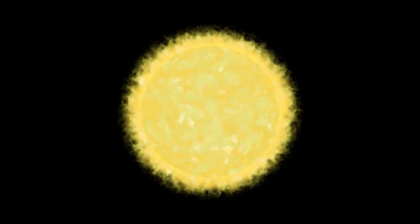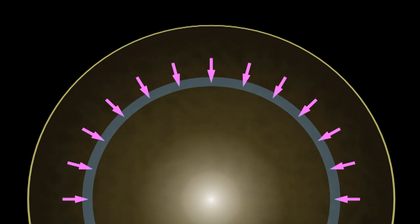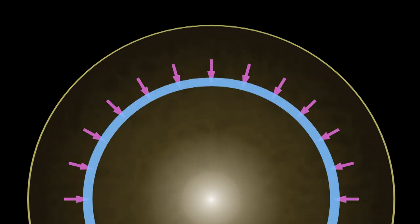Cepheid variable stars pulse. They get brighter and then dimmer. They grow bigger and then smaller. This is caused by a change happening deep within the star. The gas inside the star is changing transparency.